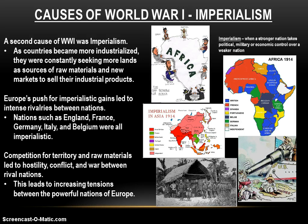Nations like England, France, Germany, Italy, and Belgium are all imperialistic — and the United States too, by the way, but that's a whole other story. As these nations compete with each other for territories in Africa and Asia, the competition leads to hostility, which leads to conflict, and in some cases even wars between rival nations. You've got rival nations in Europe squaring off on remote battlefields in Africa for control over natural resources, or fighting over tiny islands in the Pacific for control over trade. So this is leading to even more increasing tensions between the powerful nations of Europe.